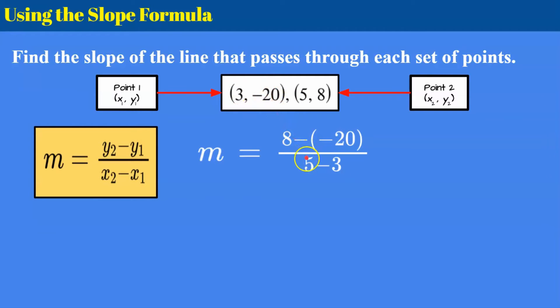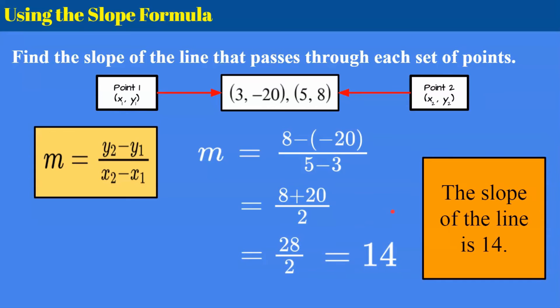Reviewing some integer subtraction. Remember subtract is add the opposite. So I'm going to rewrite my numerator. 8 add the opposite. So I have 8 plus 20 which is 28 and I divide by 2 because 5 subtract 3 is 2. 28 divided by 2 is 14. So the slope of my line is 14.